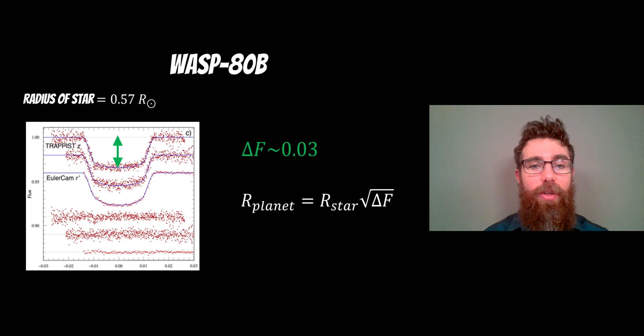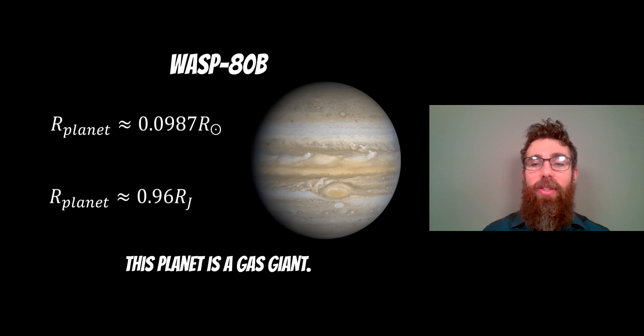If we put that into the equation, we should find that the planet is almost 10% the radius of the sun, or put it into terms of Jupiter radiuses, then it's about 0.96 times the radius of Jupiter—pretty close to being Jupiter size, and therefore it's fairly easy to determine that this is a gas giant.